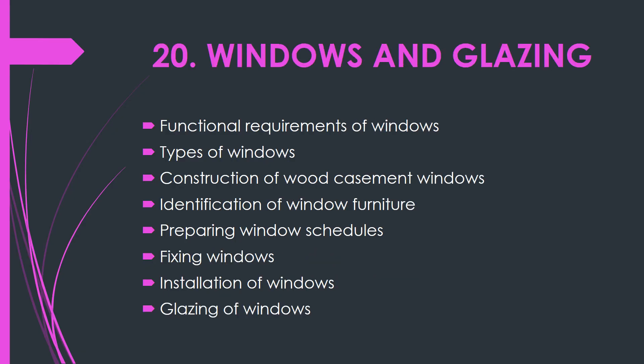Topic twenty we have windows and glazing. Under that subtopics: functional requirement of windows, types of windows, construction of wood casement windows, identification of window furniture, preparing window schedules, fixing windows, installing windows, and glazing of windows.